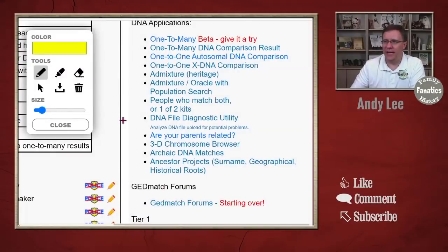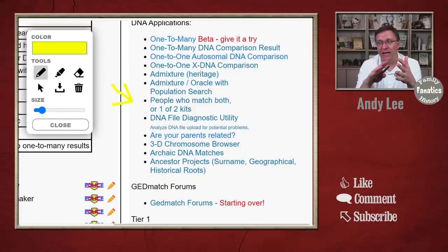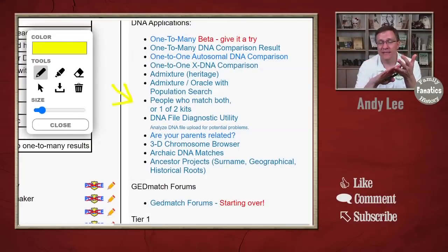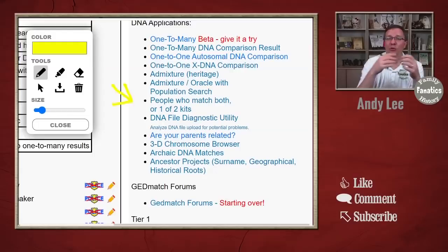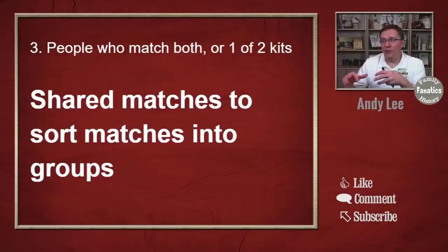When we go over to GEDmatch, we can find the 'People Who Match Both or One of Two Kits' tool right here. What you want to do is start taking those matches from the most closely related to you from the one-to-many match list, and for each one of those closely related matches, run the 'people who match both of those kits.' That way you can see which ones start to group together, and if you actually know the relationship of any of those kits, you can assign them — this is my paternal grandfather or my maternal grandmother. However you know that relationship, you're going to be able to start grouping these and seeing which DNA matches go together, and now you're actually able to start doing some research into these different people.